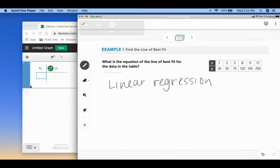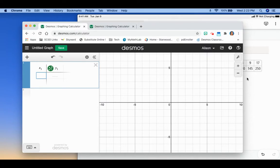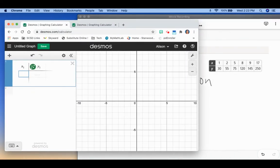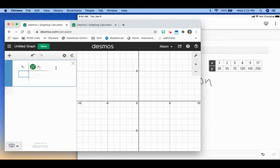So I'm going to move this over to the side so I can see. So my x's are, I'll make this a little bit smaller. Okay, my x's are 1, 2, 5, 8, 9, 17. Okay, and my y's are 30, 55, 75, 120, 145, and 250.